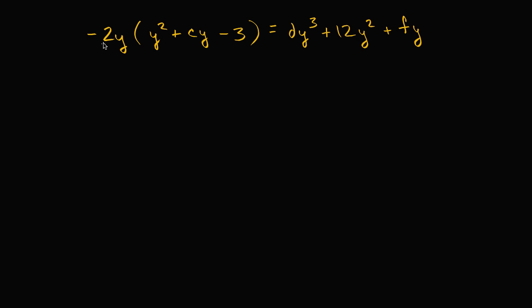So we have an equation right here that says negative two y times the expression y squared plus cy minus three is equal to dy to the third plus 12y squared plus fy.